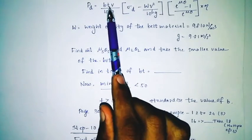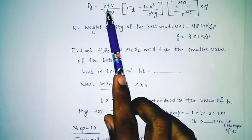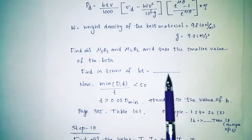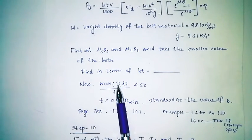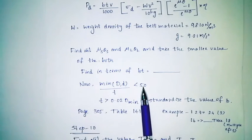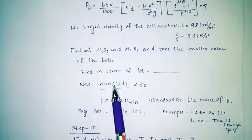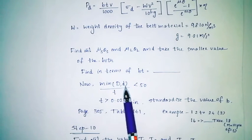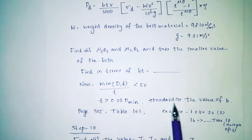Bt is equal to this equation. Now, minimum of d divided by t must be less than 10. That is, t greater than 0.02 into d minimum — that is the minimum value of d.